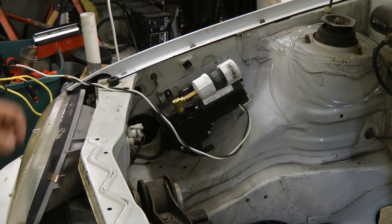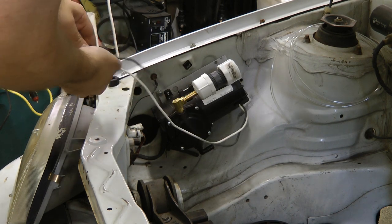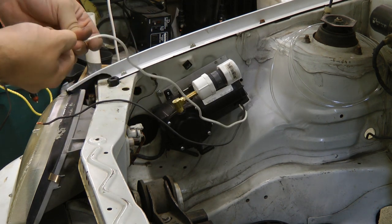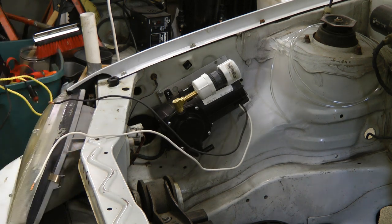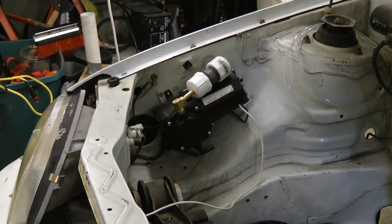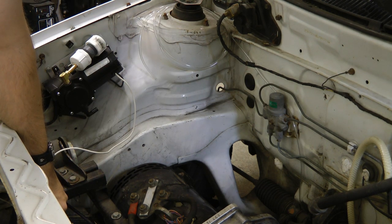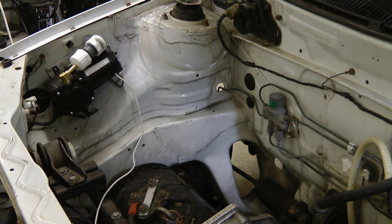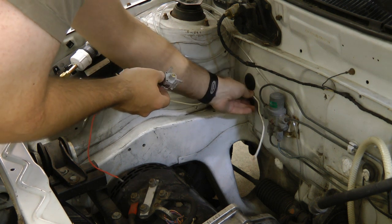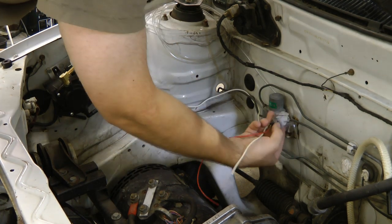Time to do the wiring now. Ground just has to go to the vehicle chassis and the positive has to go over to the vacuum switch and then over to the switched 12 volts when the vehicle's on. The pump seems to work fine. Now let's see where to put this vacuum switch, probably just strap it on somewhere up here right where the vacuum hose comes out.